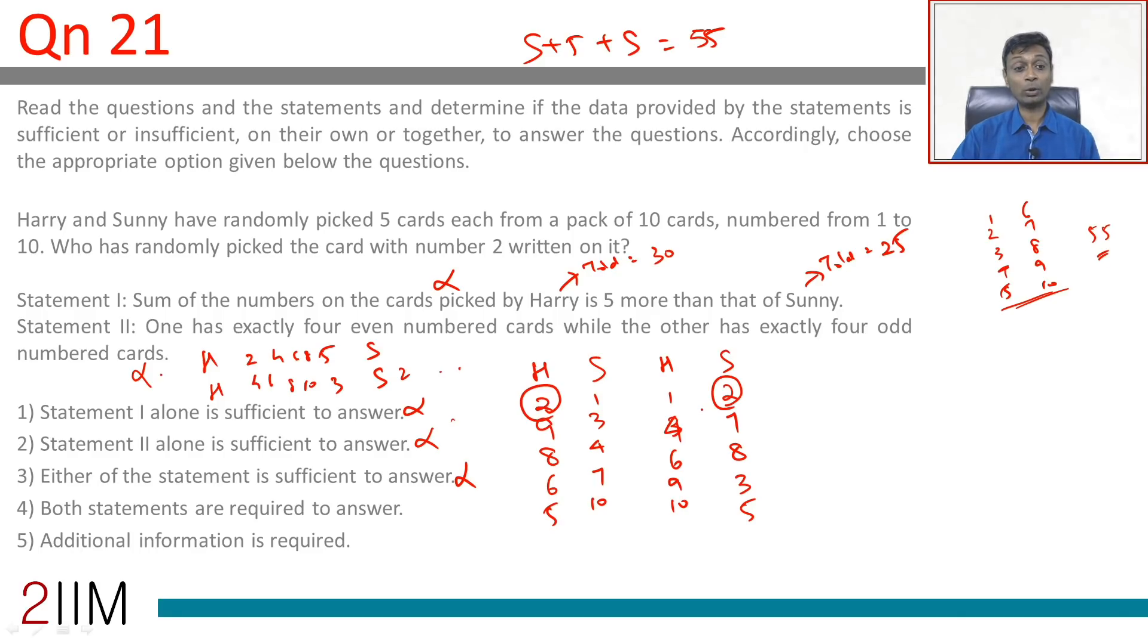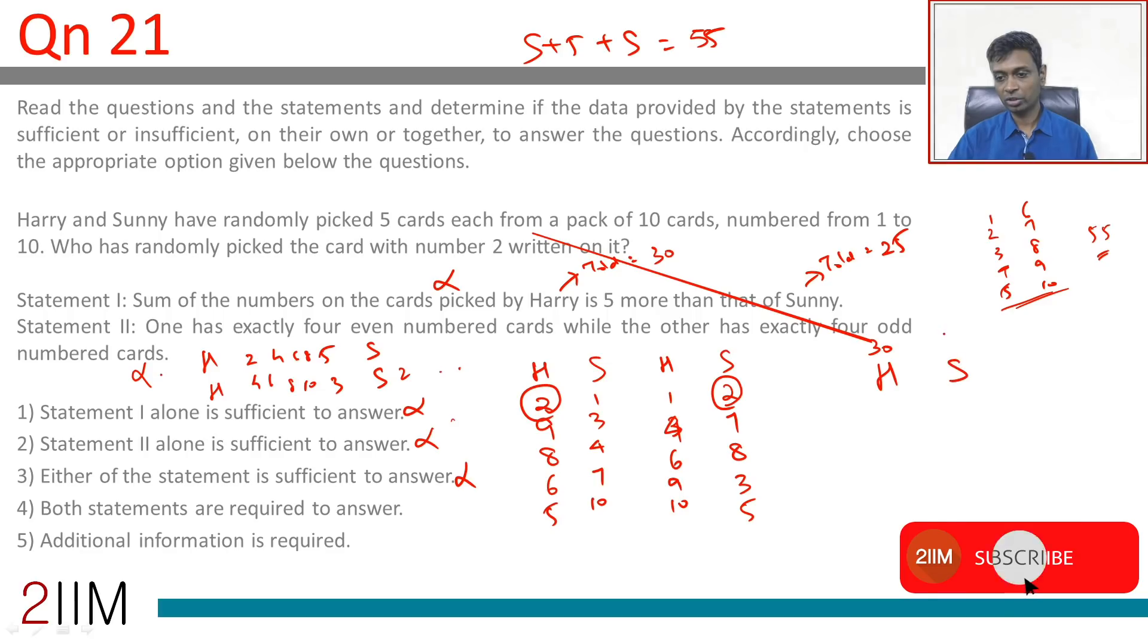Now we know that we are going to use everything available in this question. The sum of the numbers picked by Harry is 5 more than that of Sonny, so Harry's total adds up to 30, Sonny's total adds up to 25.